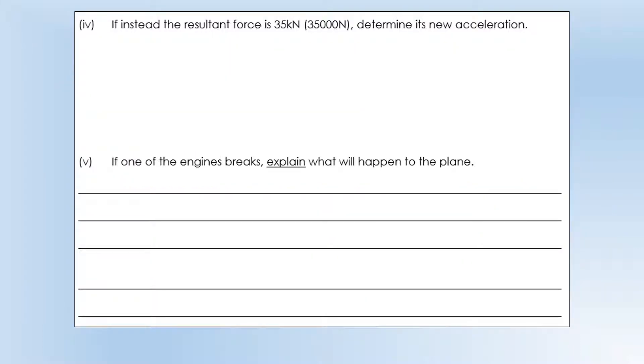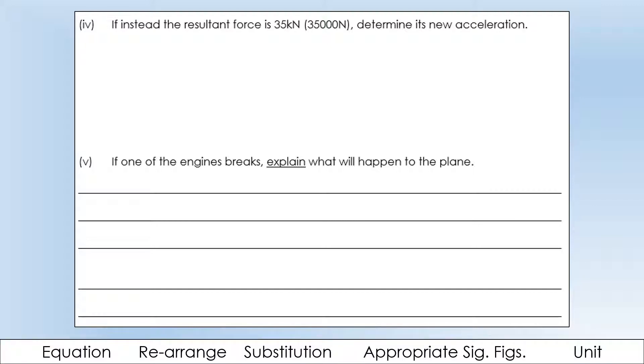If instead the resultant force is 35 kilonewtons, determine its new acceleration. So when you see a K next to the unit, that means kilo, that means 1,000. So 35 kilonewtons is just 35,000 newtons. So again, we're going to be using the same stages in our working. So this is the equation that we use. This time, we want to calculate acceleration. So what I've done is I divided both sides by mass. Then I've substituted in the numbers. Then I'm going to give the answer to an appropriate number of significant figures, 2, and with a unit, metres per second squared. That's the unit of acceleration.